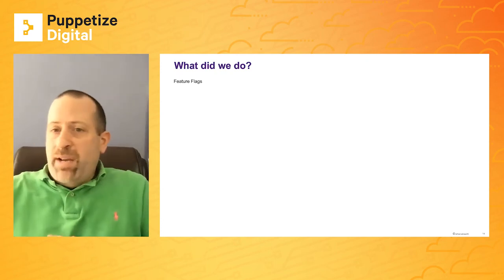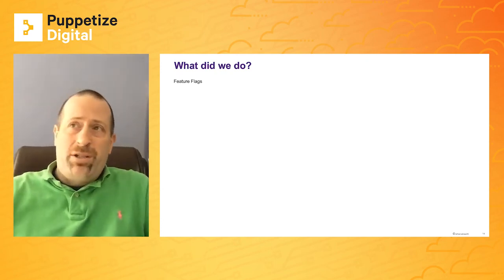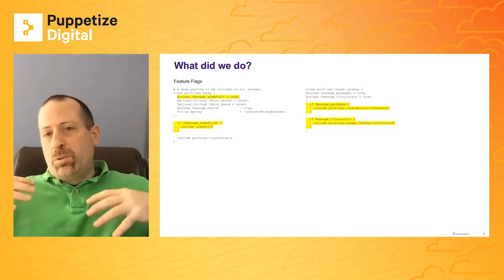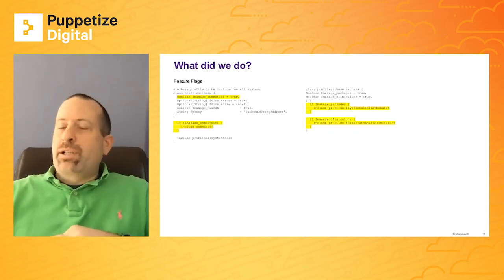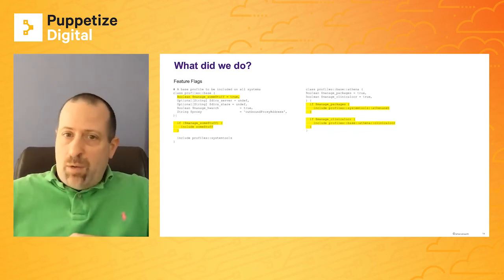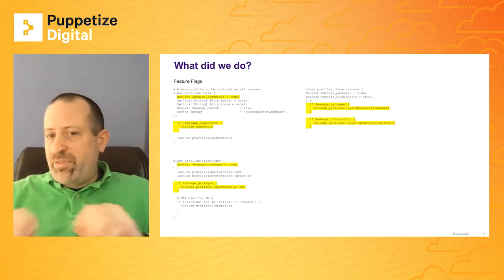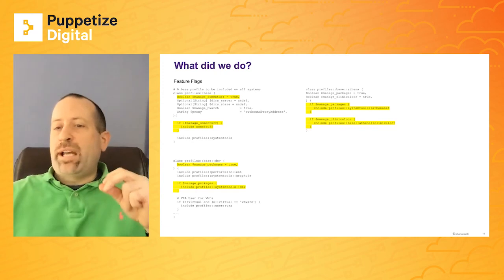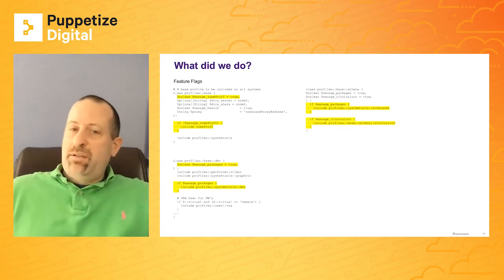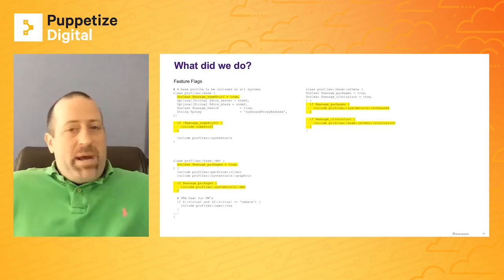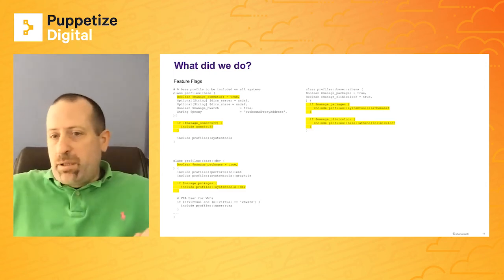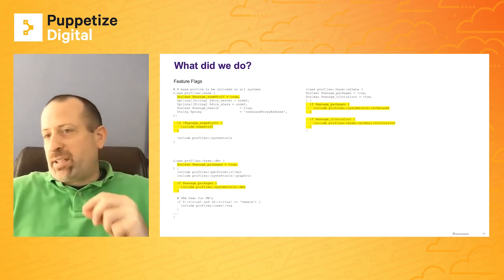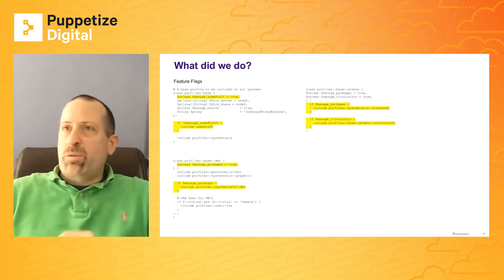Another thing we did, which some of you may have noticed from an earlier example, is we made use of feature flags. This allowed us to limit where and when certain profiles were being included programmatically. We have a lot of snowflakes — some of this is necessary and on purpose — but we didn't really have the right constructs to manage this well. This led to a lot of bad patterns like regex host-based name selectors. Using feature flags like this allows us to have these snowflakes but keep our code manageable.